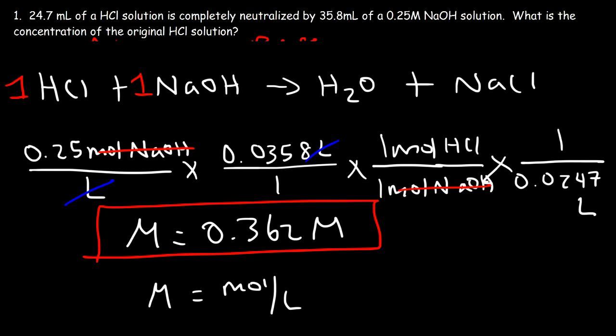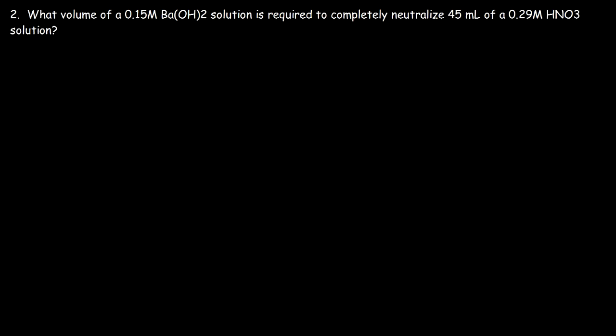Problem 2: What volume of a 0.15 molar barium hydroxide solution is required to completely neutralize 45 milliliters of a 0.29 molar HNO₃ solution? Like the previous problem, we'll use two techniques. Notice that nitric acid is monoprotic — it only has one hydrogen — but barium hydroxide has two hydroxide ions per formula unit, so we need to modify the equation.